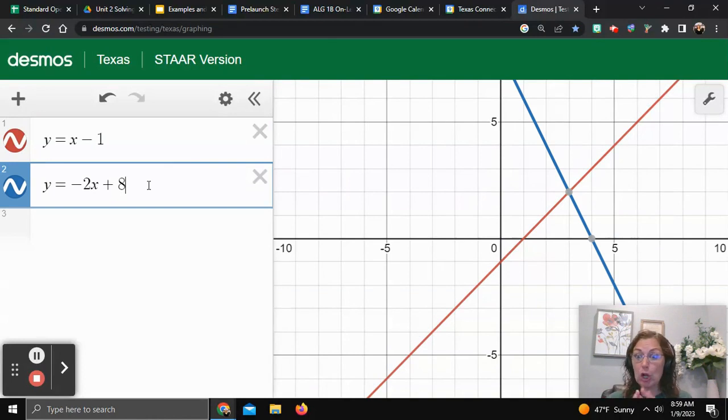Notice how Desmos did all the hard work for graphing for us, and we're looking for that point of intersection. If you'll take your mouse and just hover over that point where you see the two lines intersecting, Desmos is telling you the exact answer here.